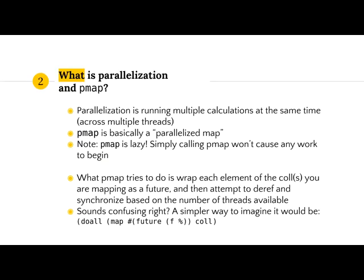What PMAP tries to do is wrap each element of the collection you're mapping through as a future, and then later attempts to deref and synchronize them based on the number of threads available on your CPU. A simple way to imagine it: think of it as a map where you map a future over the collection. It's a bit trickier because it has to coordinate and merge things in the correct order, but that's more or less what's going on.